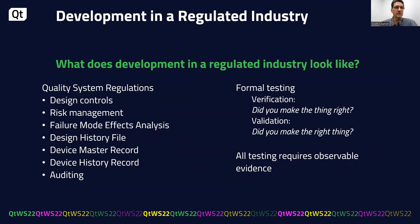The quality system regulations lead us to use the following tools and techniques. Design controls give structure to the design documents, all the way from requirements to implementation. Risk management and FMEA are used to ensure safety. The DHF documents all aspects of the design and is kept for the entire life cycle of the product, which can be many years. The DMR includes all instructions and drawings used to manufacture the device, and the DHR is a per-unit record of the device's adherence to the specifications. Auditing is used by regulating agencies to make sure that companies are in compliance.